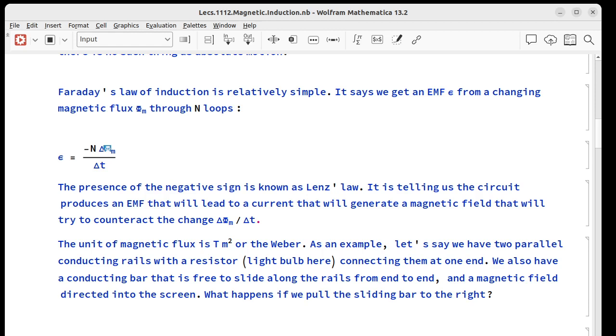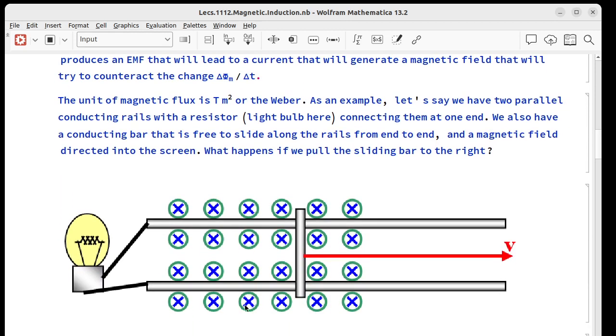What happens if we pull this vertical bar to the right? Of course we're not changing the field, but we're changing the area that the field goes through. So that means we're changing the flux. In this case, we're increasing the amount of flux into the page because you can see the little feathered tail of the arrow here. This X means the B field is going into the page. So we are increasing in-the-page flux when we do this.